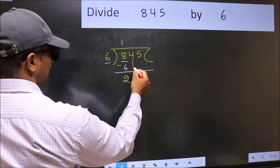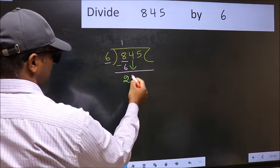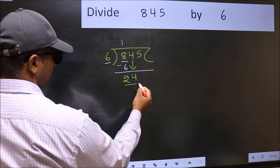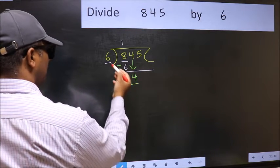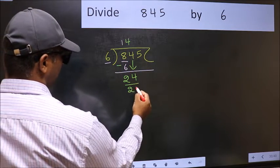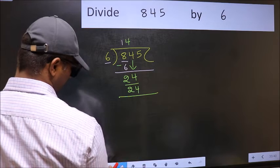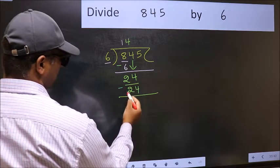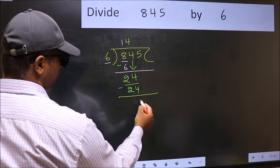After this, bring down the beside number. So 4 down. Now 24. When do we get 24 in 6 table? 6 fours 24. Now you should subtract. 24 minus 24, 0.